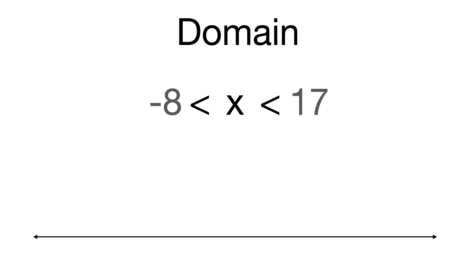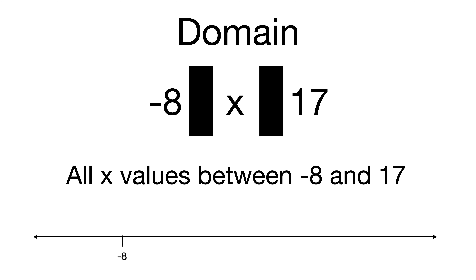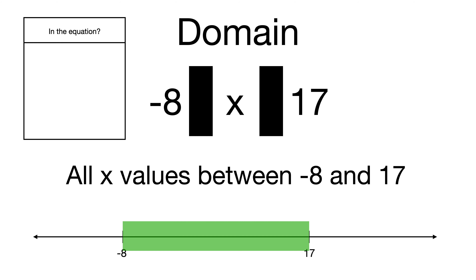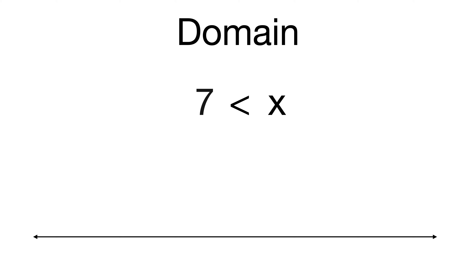Let's try another example. This domain is between negative 8 and 17, so all x values between negative 8 and 17. You can cross out the inequality signs if it helps. On the number line, negative 8 is on one end and 17 on the other. The number 12 falls in between, so yes it's in the domain. The number 20 is just outside, so that's a no.